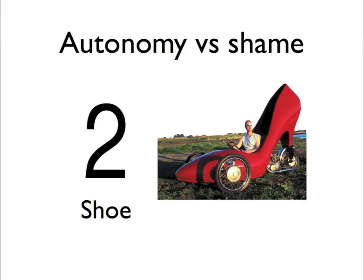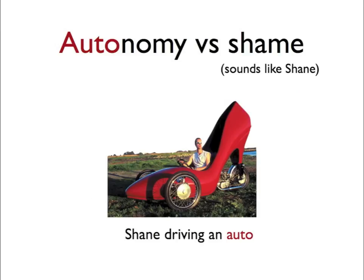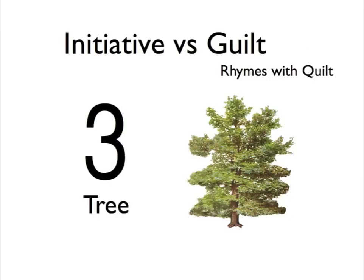For number two, we have a shoe. Number two is autonomy versus shame. I see the word auto in there. So what if we pictured this shoe with some wheels on it looking like a car? That gives us the first one pretty good. So when we think of two and a shoe, we have a shoe that's a car — autonomy. Now we need shame. Shame sounds like the name Shane. Let's just put Shane in that car. And now we have autonomy versus shame.